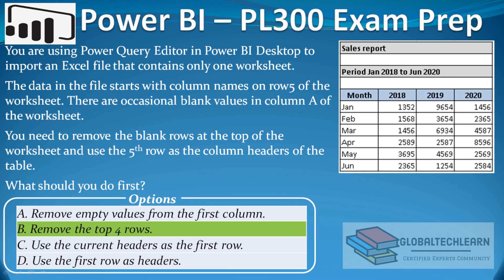Going back to our question, we performed two steps: first we removed the top 4 records — that is Option B — and then we set the first record as the header — that is Option D. As per the question asking for the first step, the correct answer is Option B: remove the top 4 records.